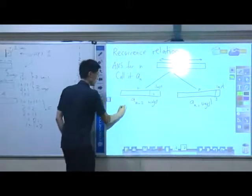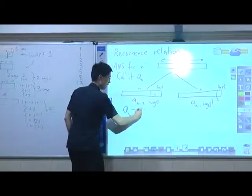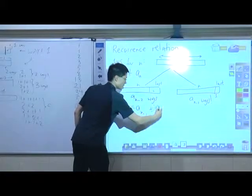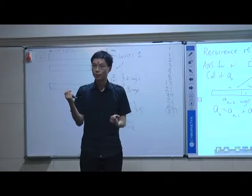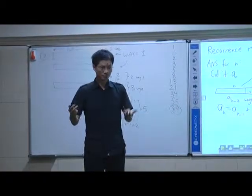And therefore, this a_n is equal to a_{n-1} plus a_{n-2}. So we have just proven that it satisfies the Fibonacci recurrence, which is max.